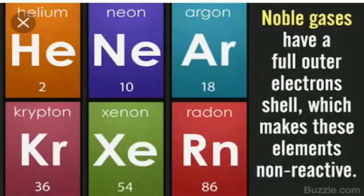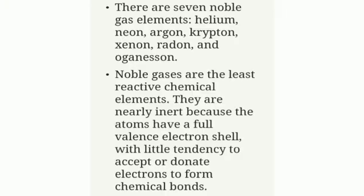Next we have inert gases, also known as noble gases or rare gases. These are elements that do not react chemically with other elements. They have a full outer electron shell, which makes them non-reactive. There are seven noble gas elements: Helium, Neon, Argon, Krypton, Xenon, Radon, and Oganesson. Noble gases are the least reactive chemical elements.